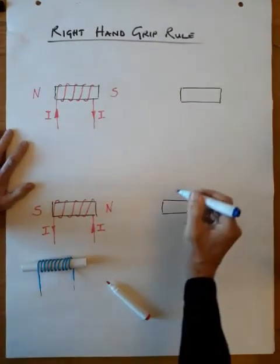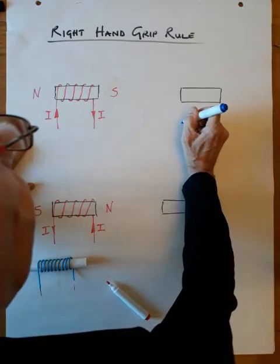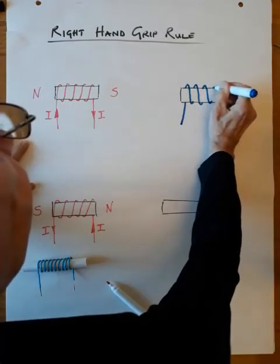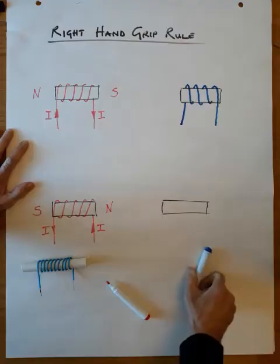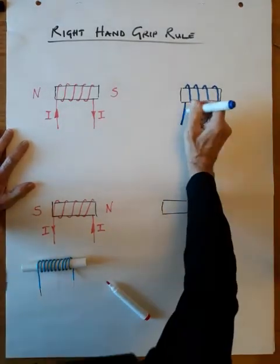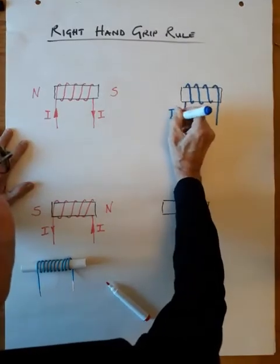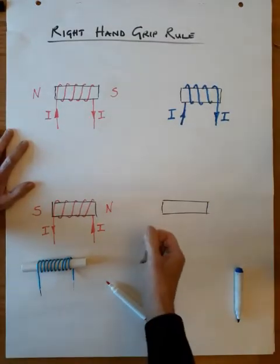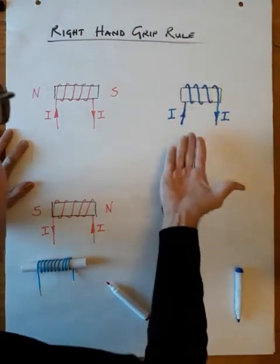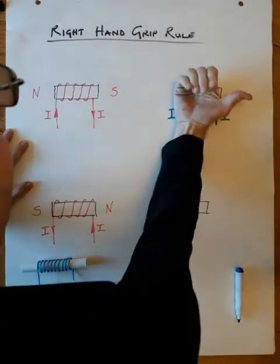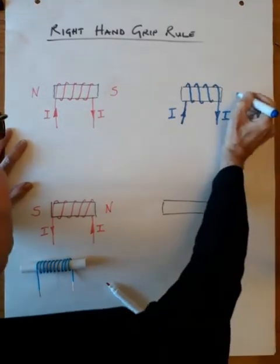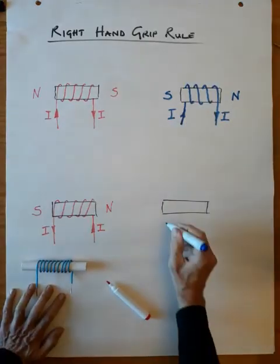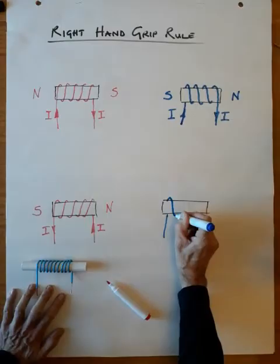Your right thumb points north, so this is now north and this is south. If we wind the conductor in the opposite direction, let's see what happens. Now wound in a different direction: if the current goes in there and out there, then if you put your fingers around the coil in the direction the current is going, your thumb points north.